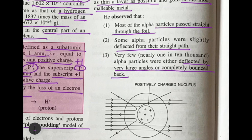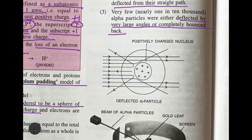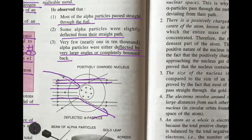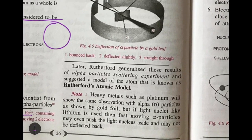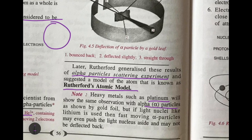Most alpha particles passed through the foil; some bounced back completely or were deflected in another direction. Rutherford generalized these results of the alpha particle scattering experiment and suggested another model of the atom — Rutherford's atomic model. He also noted that certain heavy metals like platinum would show the same observations with alpha particles.